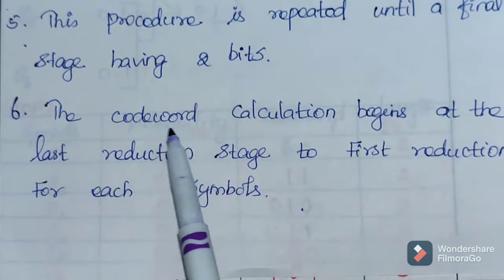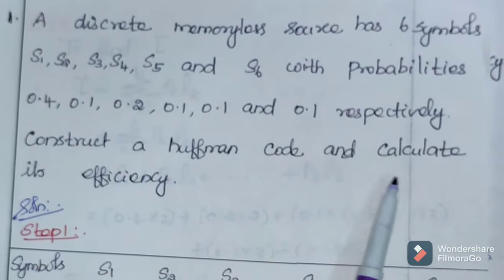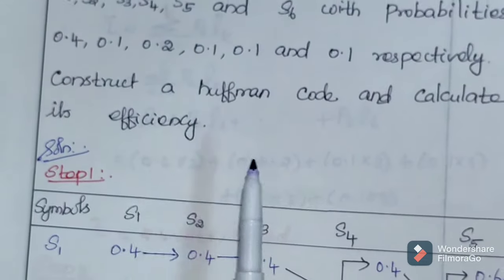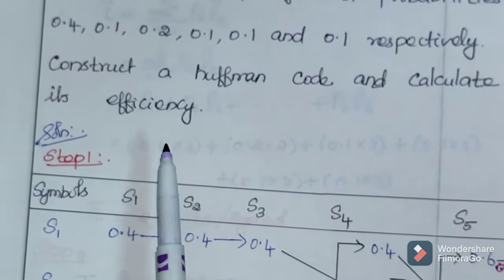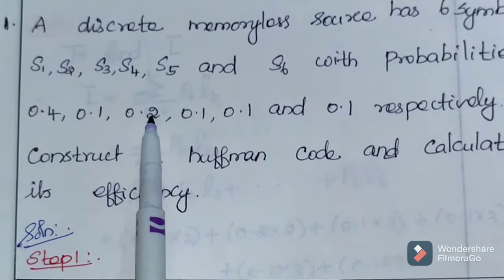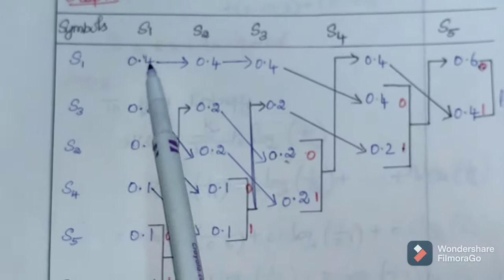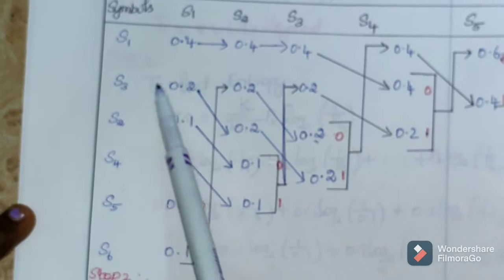The two messages of lowest probabilities are assigned. This procedure is repeated until the final stage having 2 bits. The codeword calculation begins at the last reduction stage to the first reduction for each symbol.